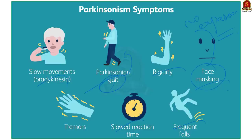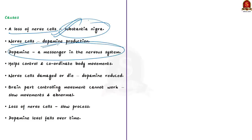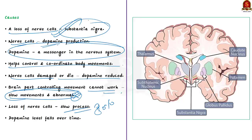Now let us see the causes of Parkinson's disease. This disease is caused by a loss of nerve cells in the part of the brain called the substantia nigra. Nerve cells in this part of the brain are responsible for producing a chemical called dopamine, which acts as a messenger in the nervous system and helps control and coordinate body movements. If these nerve cells become damaged, the amount of dopamine in the brain is reduced, meaning the part of the brain controlling movement cannot work well. The loss of nerve cells is a slow process, and only when 80% of the nerve cells in the substantia nigra have been lost do the symptoms of Parkinson's disease appear and gradually become more severe.